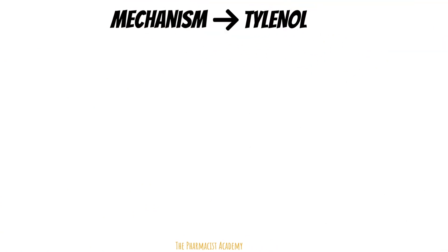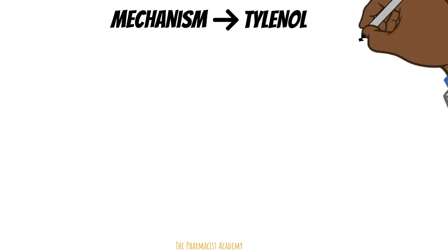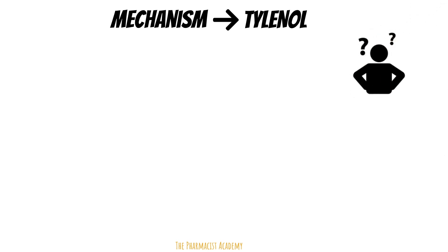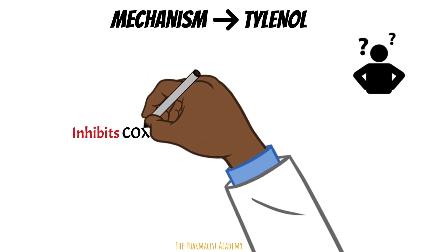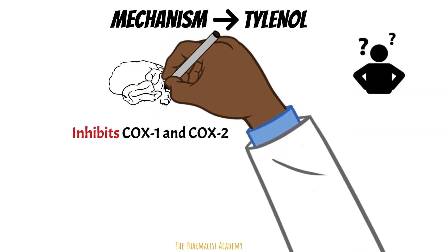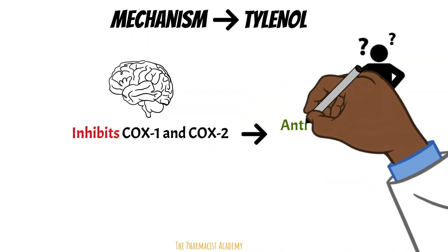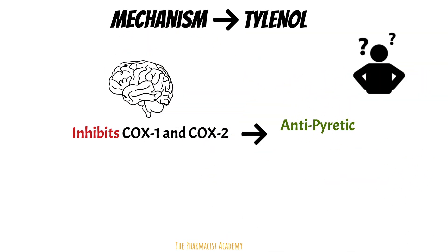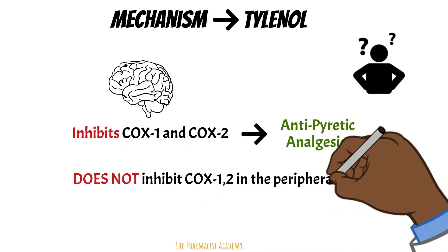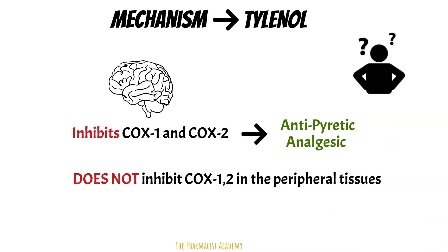The mechanism of Tylenol is very similar to NSAIDs. Depending on the source you check, Tylenol's mechanism is sometimes listed as unknown. However, many studies have shown that it inhibits COX-1 and COX-2 in the CNS, leading to antipyretic and analgesic effects. Please keep in mind that it does not inhibit COX-1 and COX-2 in the periphery, and therefore it is not considered an anti-inflammatory agent.